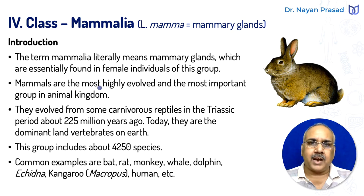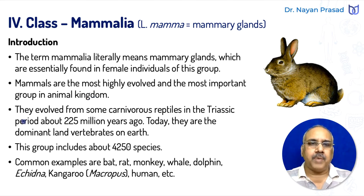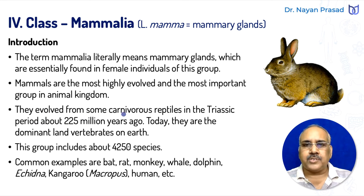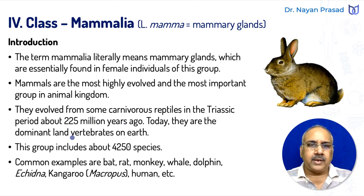Mammals are the most highly evolved and the most important group of animal kingdom, including humans. Mammals evolved from some carnivorous reptiles in the Triassic period about 225 million years ago. Today they are the most dominant land vertebrates on earth.